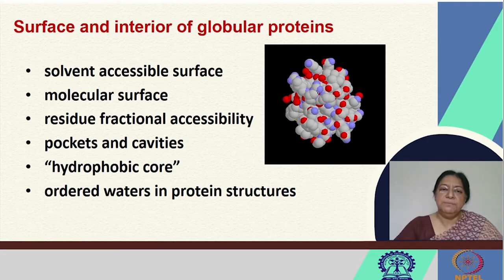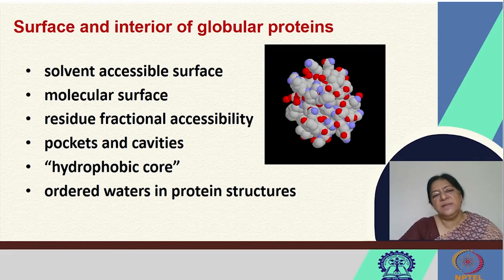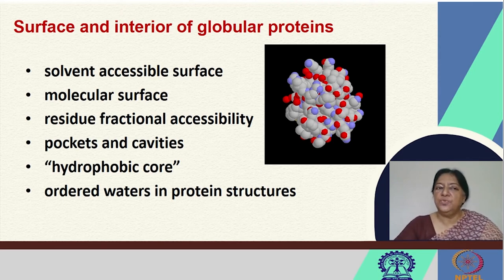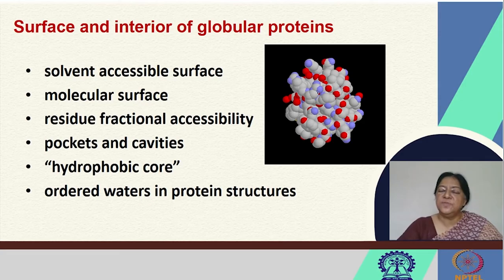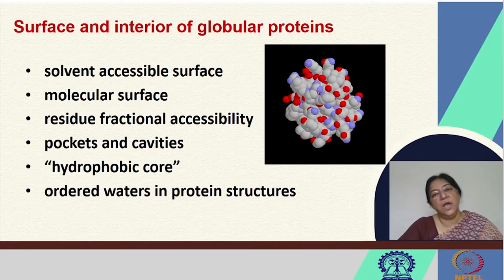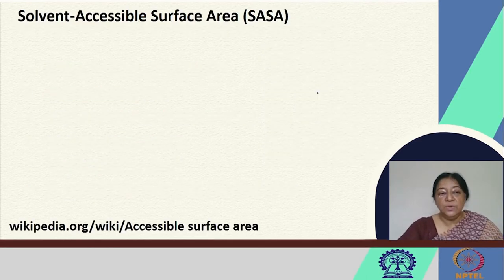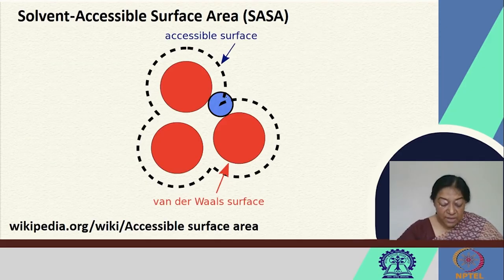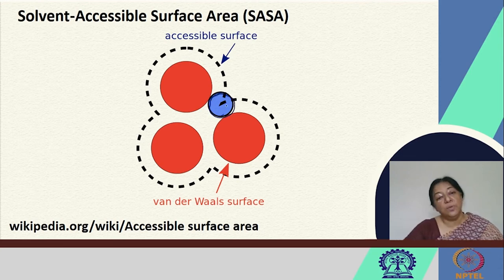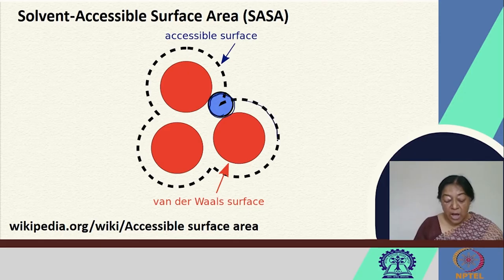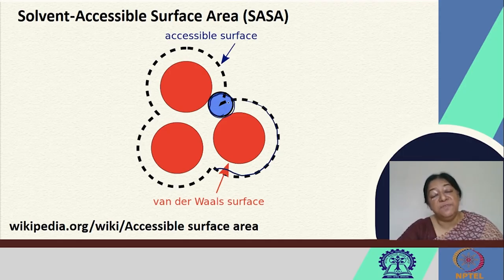Now that we have our ligand bound to our receptor protein, we can look at the solvent accessible surface. The reason we want to examine the solvent accessible surface is to know which residues are involved in protein-ligand interactions and how much surface area of the protein is lost upon ligand binding — this is particularly important for protein-protein interactions. A specific radius probe, usually the radius of a water molecule, allows calculation of how much of the protein surface is accessible to the ligand.